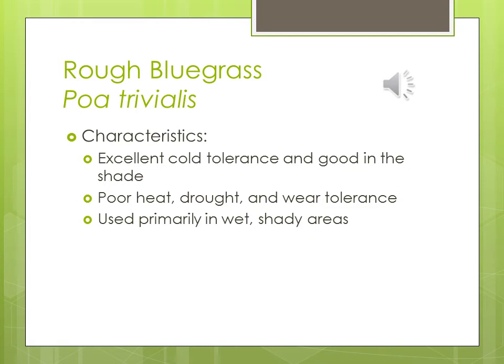Rough bluegrass: excellent cold tolerance and pretty good in shade. Poor heat, drought, and wear tolerance. Used primarily in wet, shady areas. It can withstand cooler temperatures but doesn't like heat. So if you have a wet area needing a shade-tolerant cool season grass, this would be the choice.